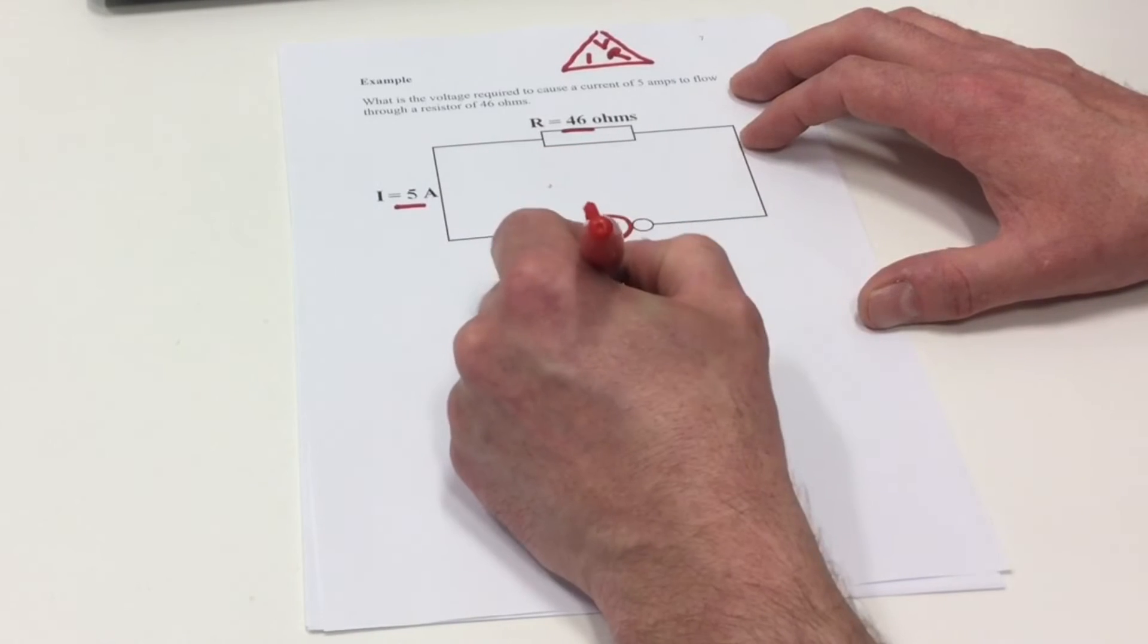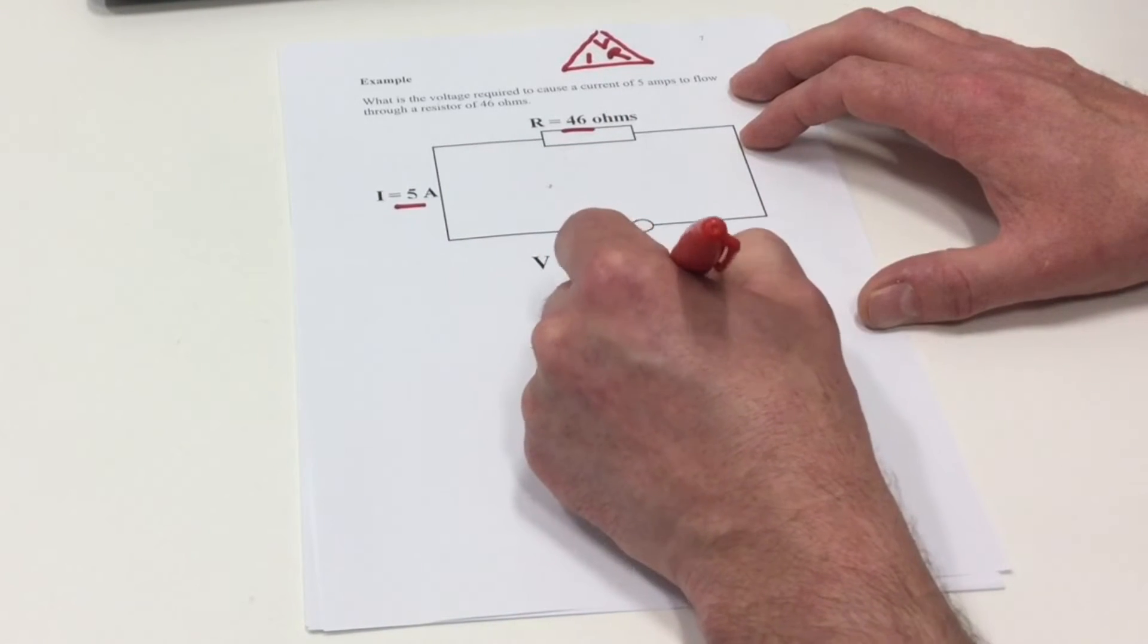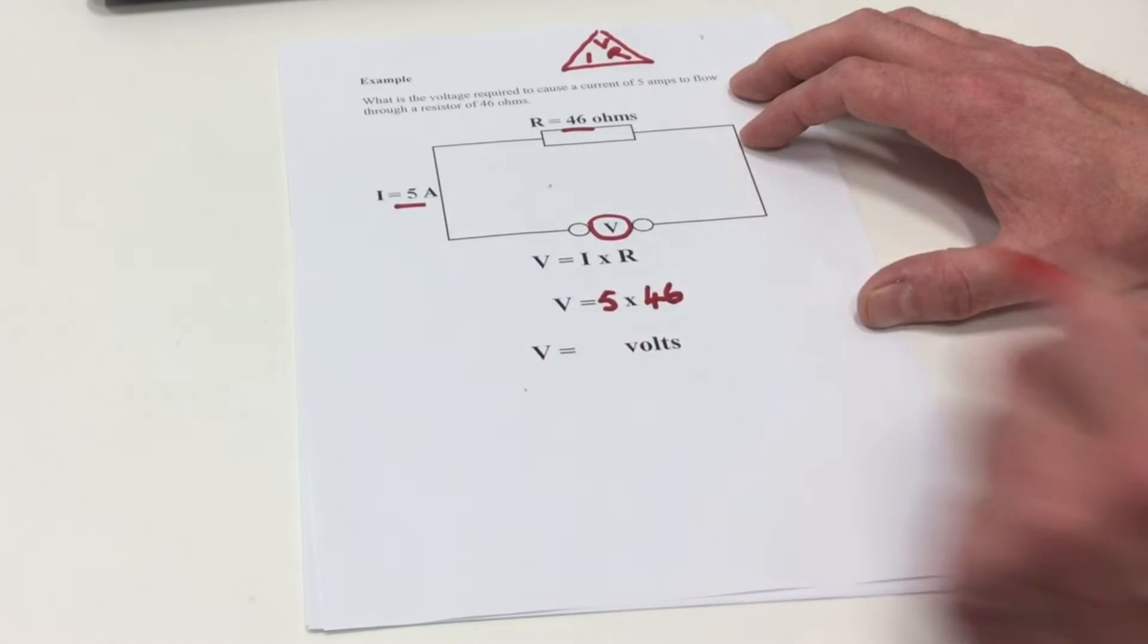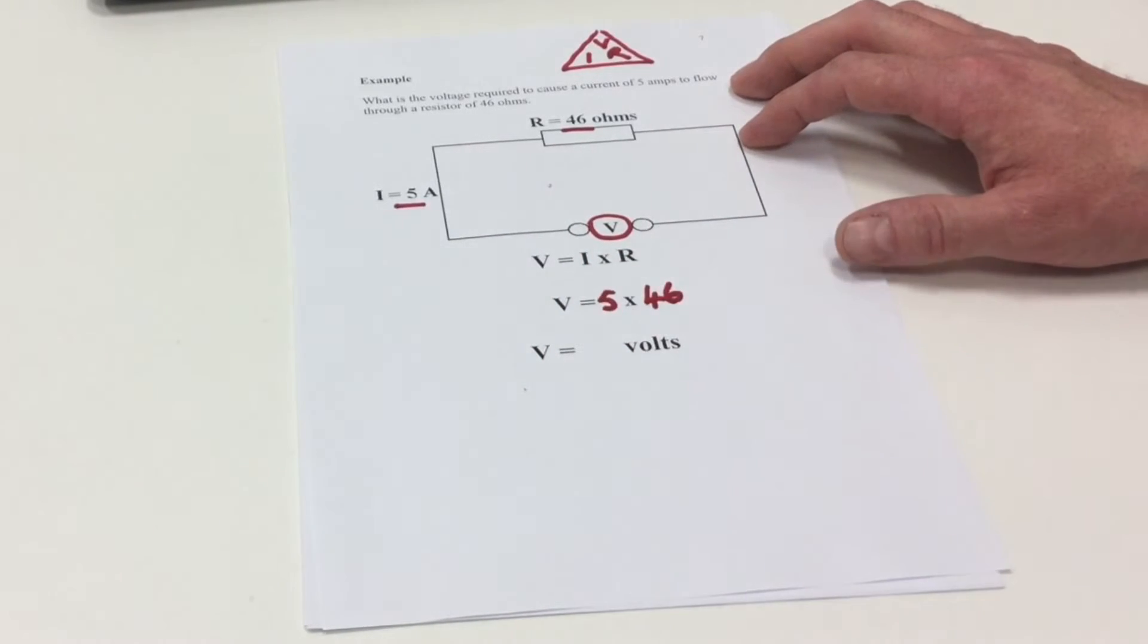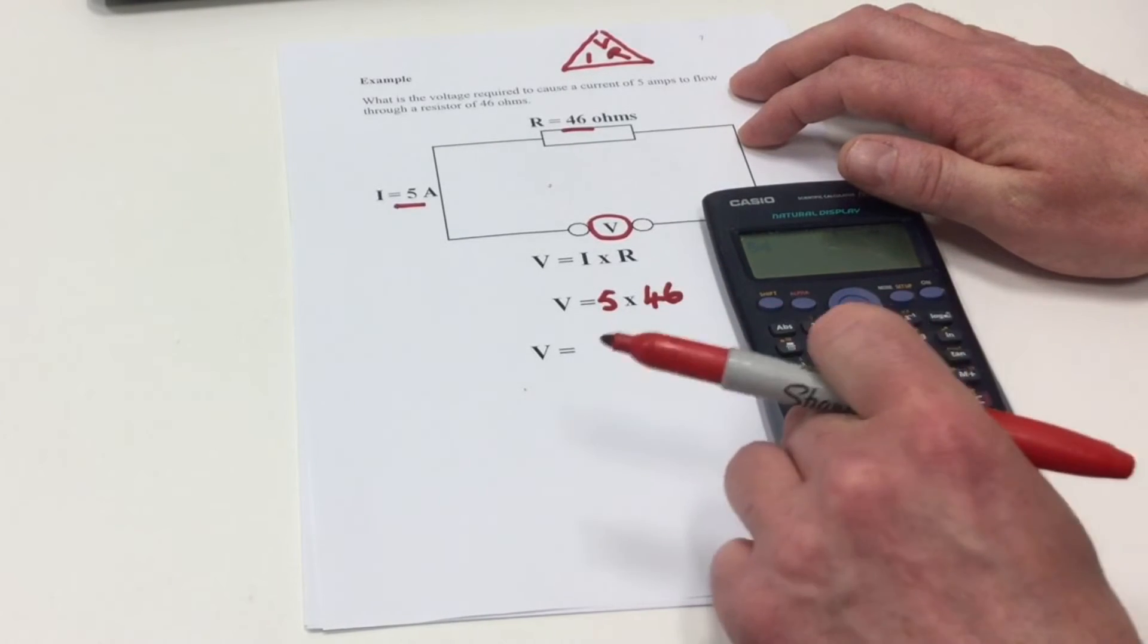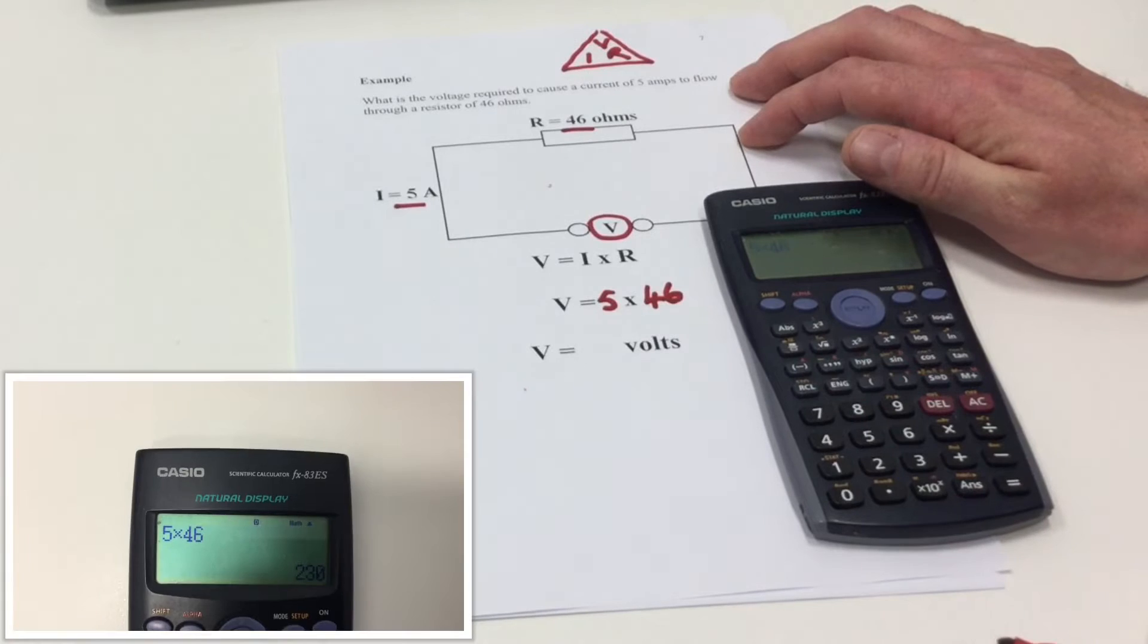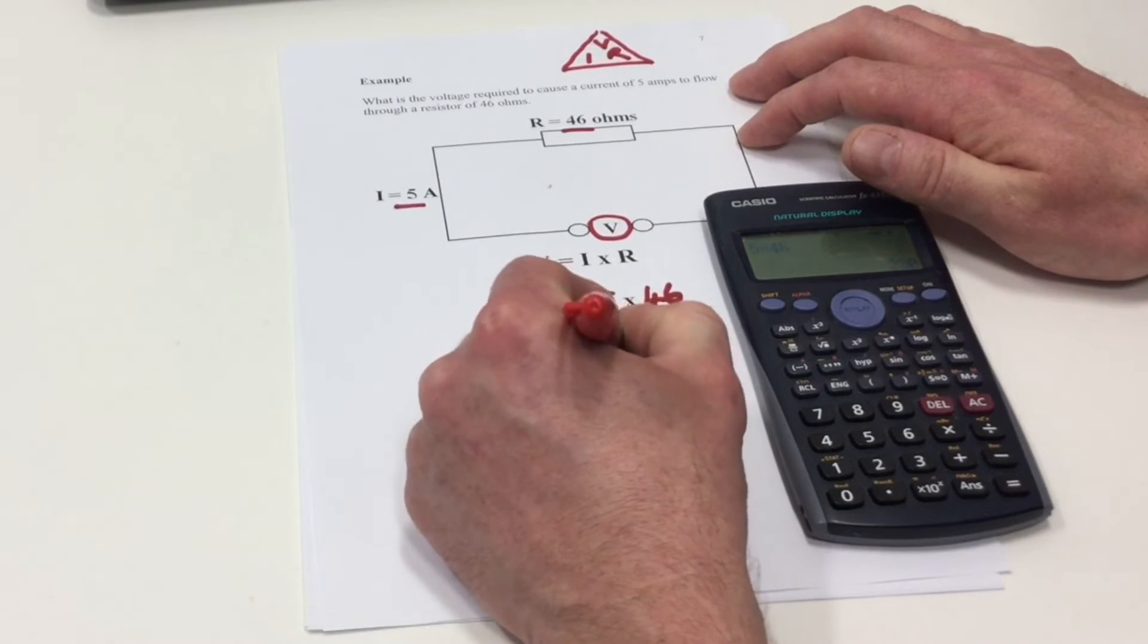Our current in circuit is 5 amps. Our resistance is 46 Ohms. By multiplying the current and resistance together we'll find our voltage. If we do 5 multiplied by 46, we can see the circuit has a voltage of 230 volts.